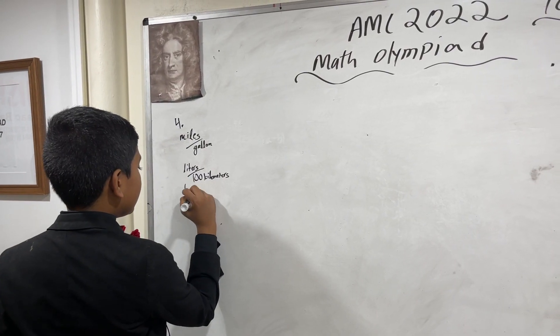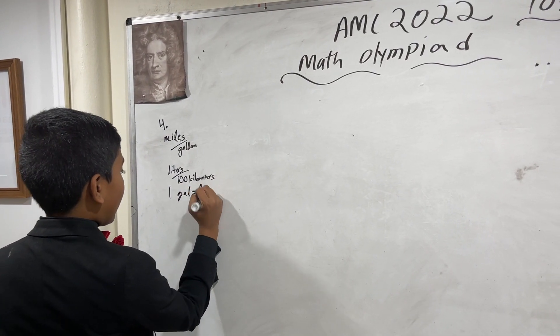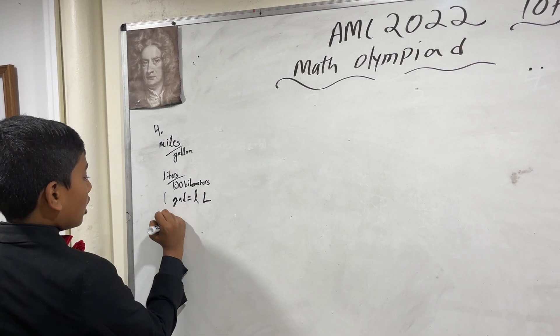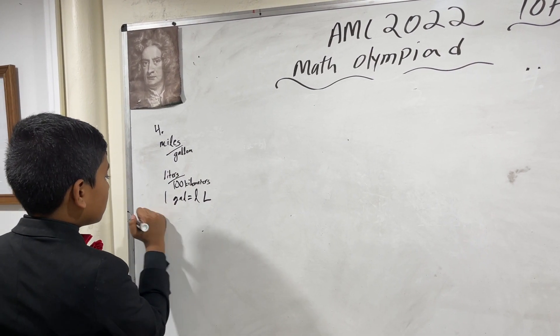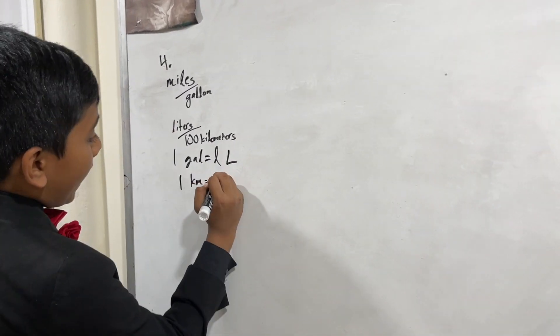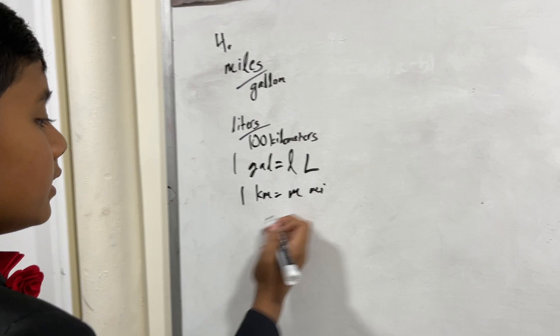They call me my lane crew. We're on to problem number four. If one gallon is equal to L liters, and if one kilometer is equal to M miles, then,